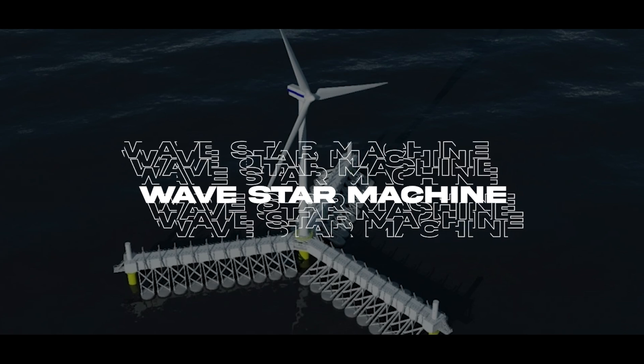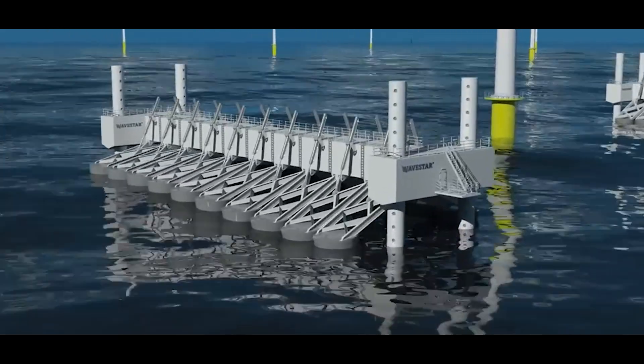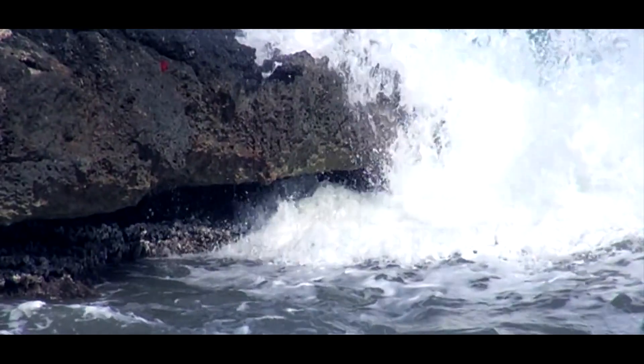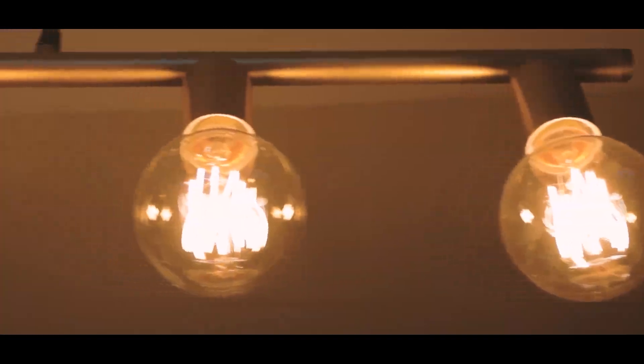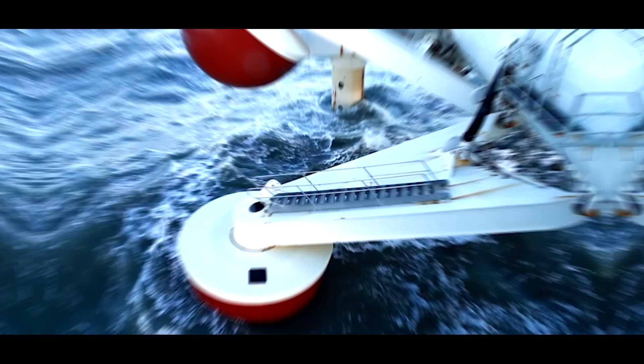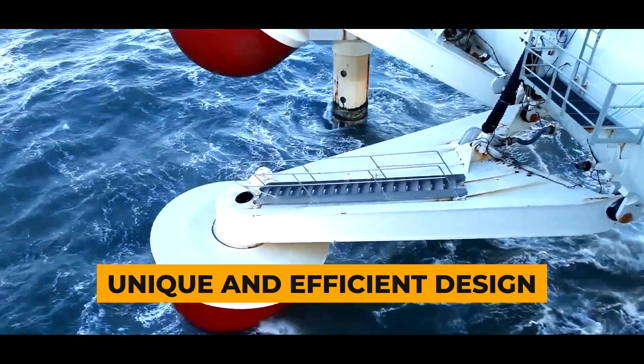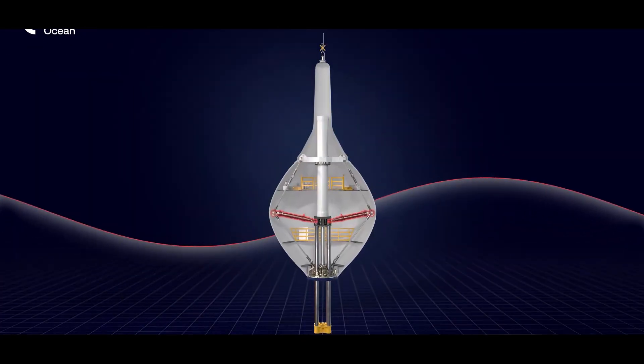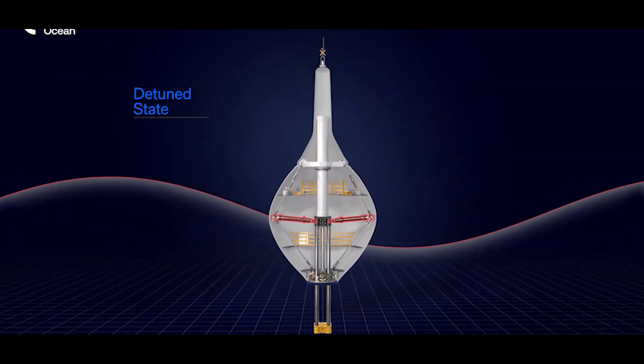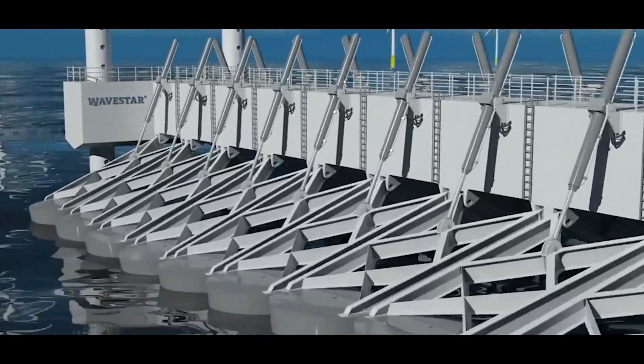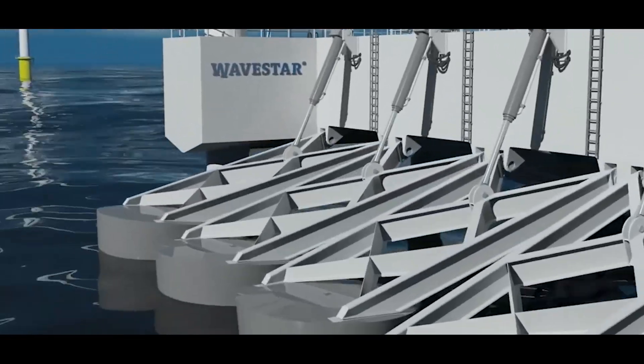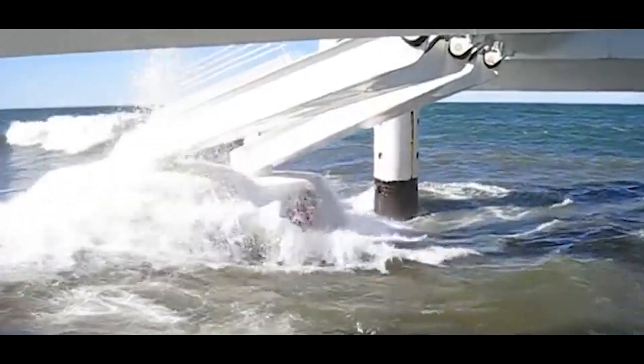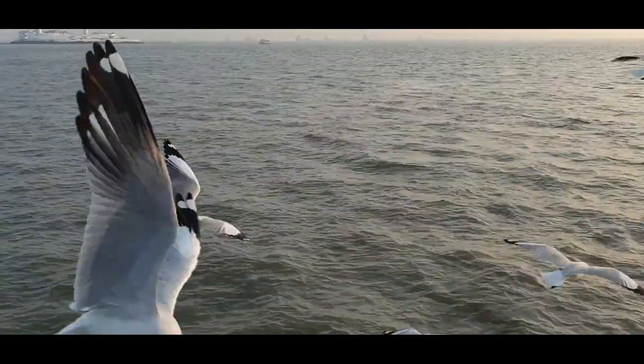Wavestar Machine. The Wavestar Machine, also known as the Wavestar, is a fascinating innovation in the field of wave energy. It harnesses the power of ocean waves to generate clean, renewable electricity using a unique and efficient design. Unlike traditional wave energy devices that rely on submerged turbines or oscillating structures, the Wavestar utilizes a series of 20 buoyant floats attached to long arms. As waves roll in, the floats rise and fall, following the motion like a flock of seabirds.